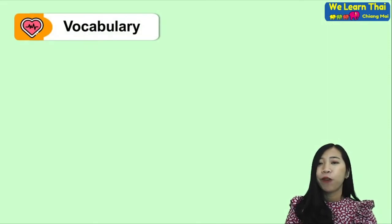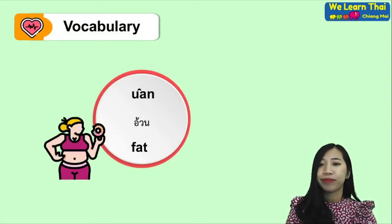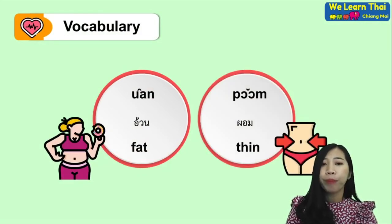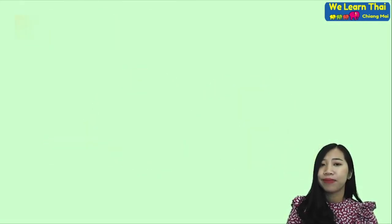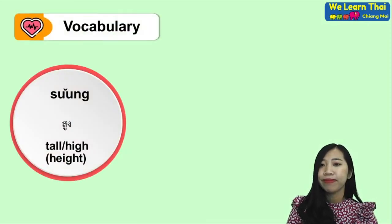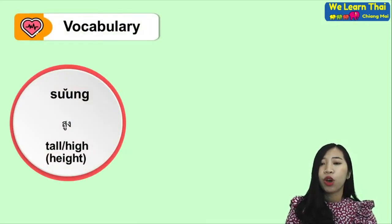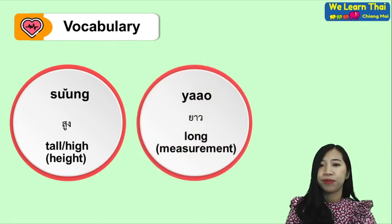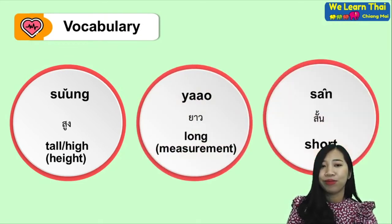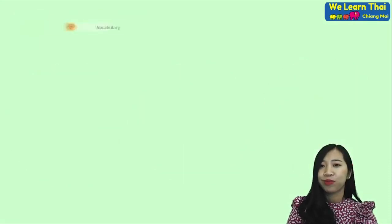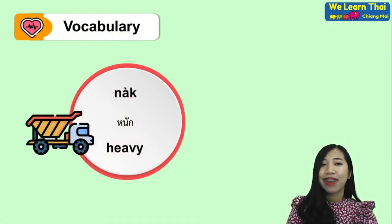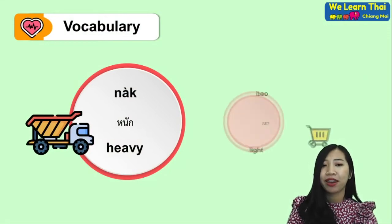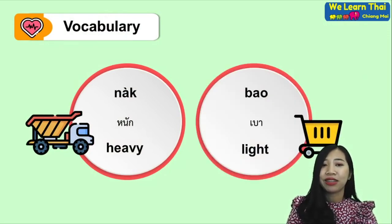For vocabulary: 'uan' — fat, 'phom' — thin, 'sung' — tall or high, 'tiao' — equal or same height, 'san' — short, 'nak' — heavy, 'bao' — light.